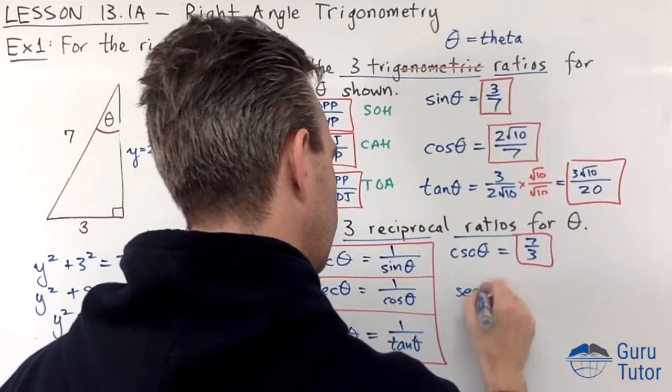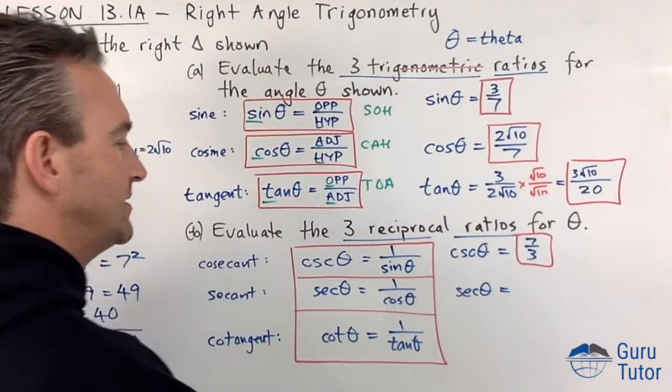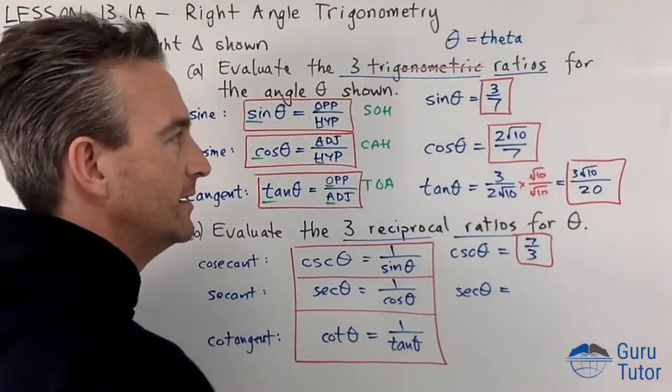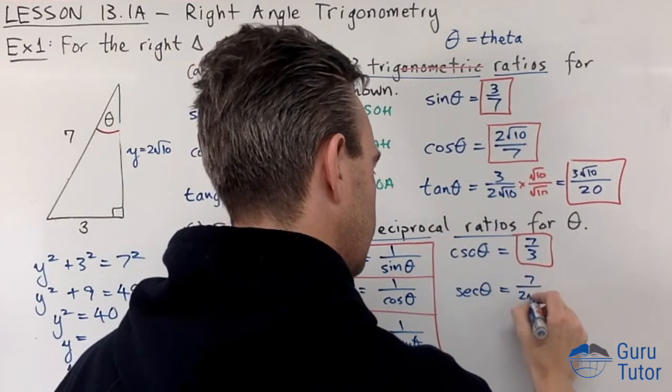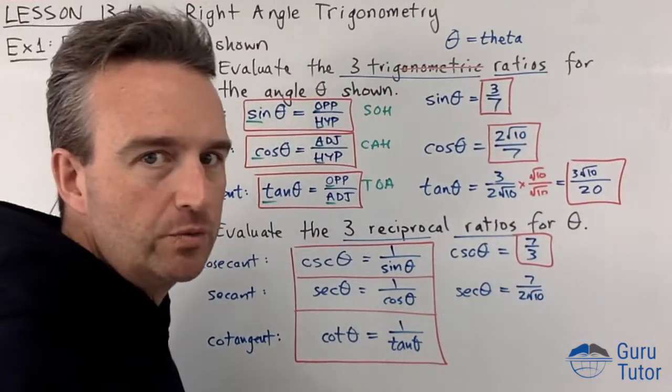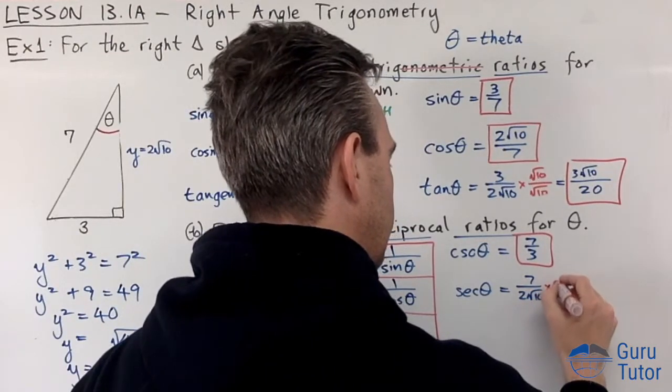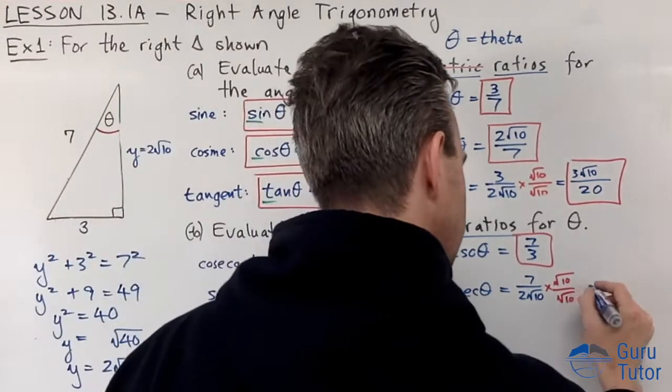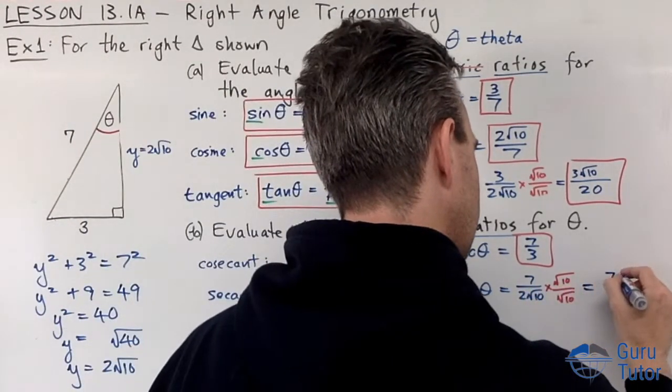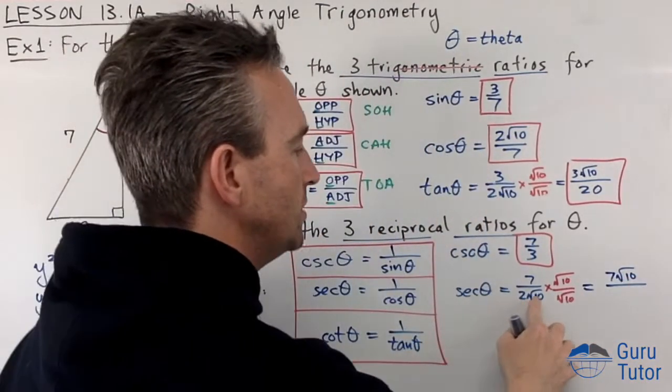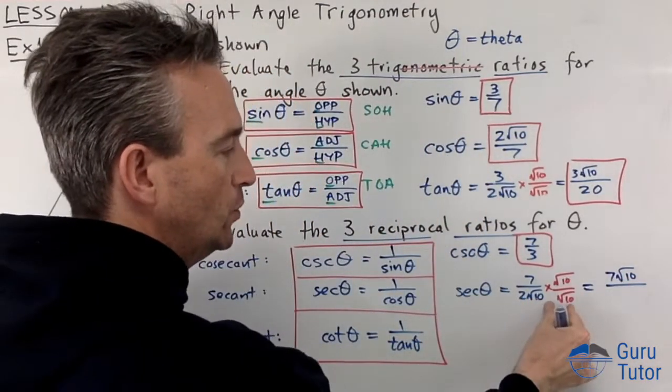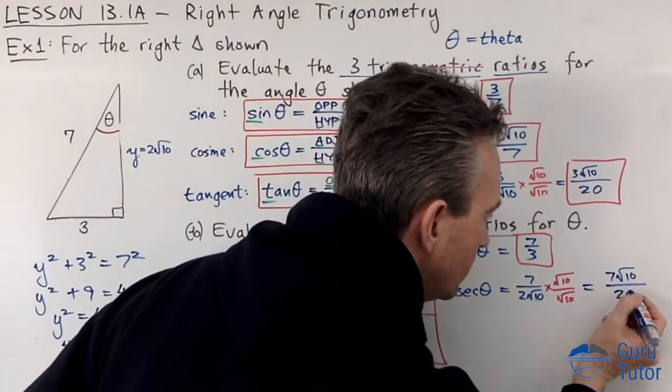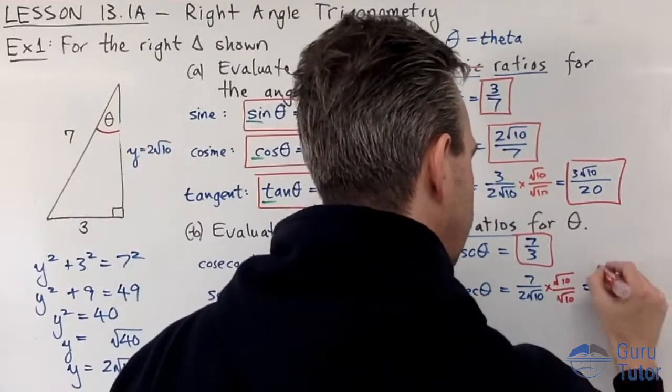Sec theta is, so where's sec theta? It's the cosine theta upside down. So what's this upside down? 7 over 2 root 10. But now we are breaking the golden rule—we've got to get rid of that radical 10 on the denominator again. Let's multiply by root 10 over root 10, which will give us 7 root 10 on top and on the bottom 2 times root 10 times root 10. So root 10 times root 10 is 10 times 2 is 20, and we get 7 root 10 over 20 for sec theta.